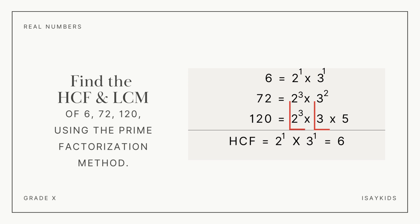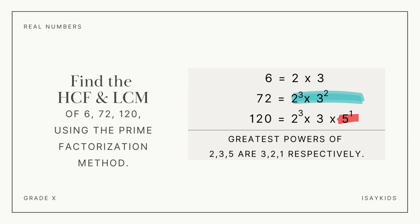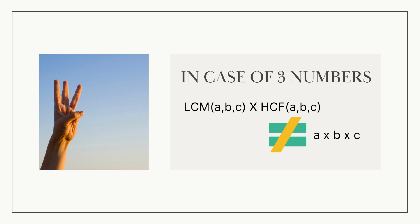Easy, right? Now let's find the LCM. All the prime factors involved are 2, 3 and 5. The greatest powers are 2 raised to the power 3, 3 raised to the power 2, and 5 raised to the power 1 respectively. Hence, LCM is 2 raised to the power 3 into 3 raised to the power 2 into 5, which gives us 360. Please note that in the case of 3 numbers, HCF into LCM is not equal to the product of the numbers.